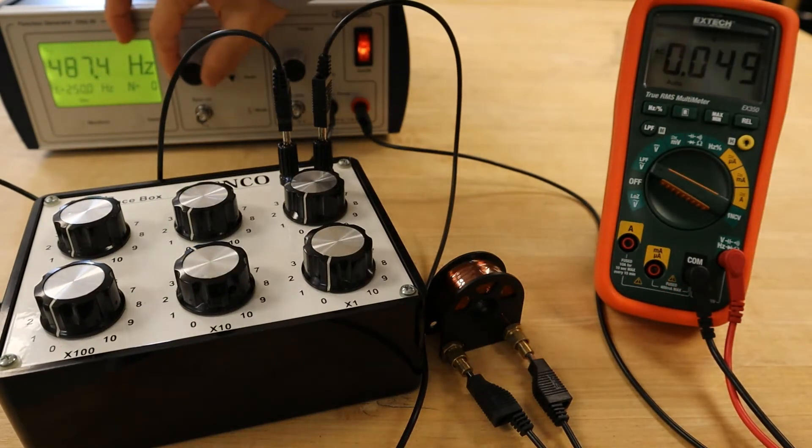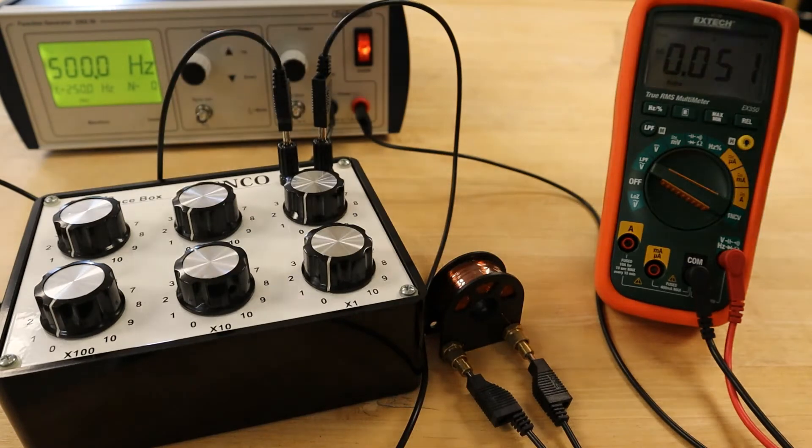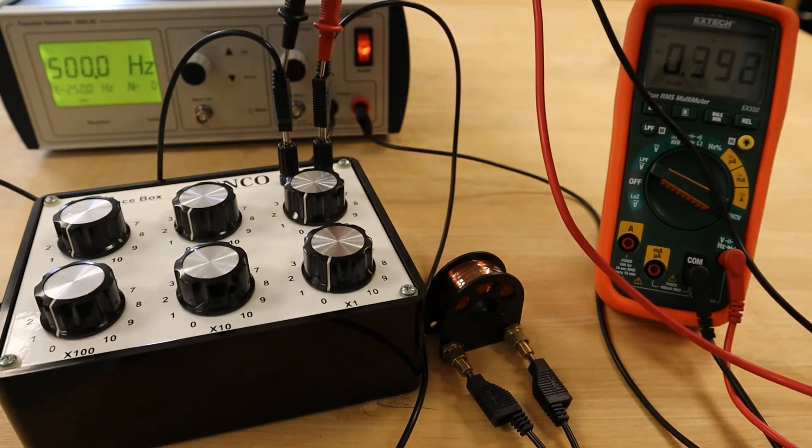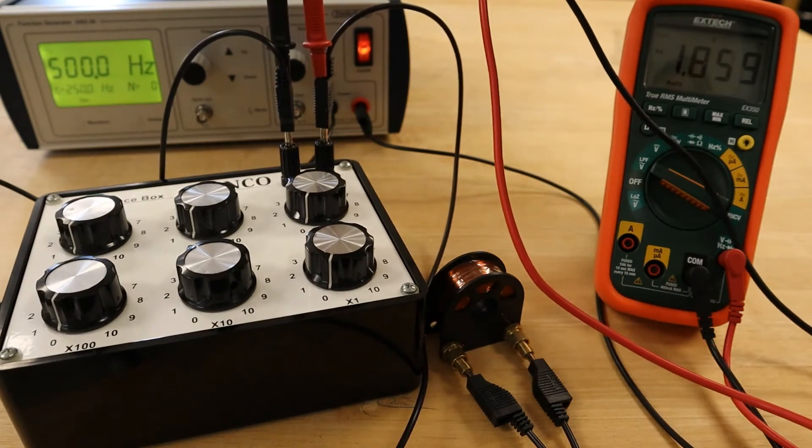We will then increase the frequency of the function generator to 500 Hz and repeat the same process just as was done in the first procedure. Again, the inductance should be independent of frequency, and an average value will be used in the next procedure.